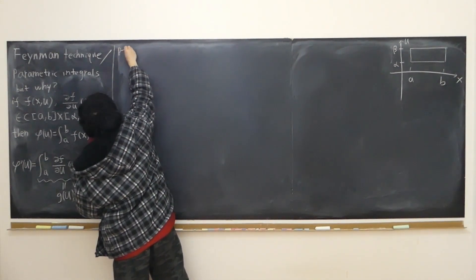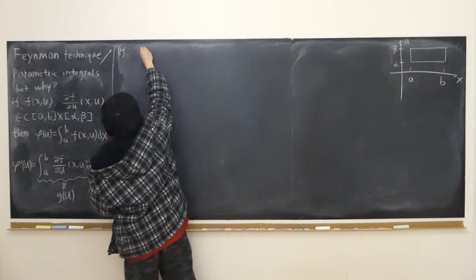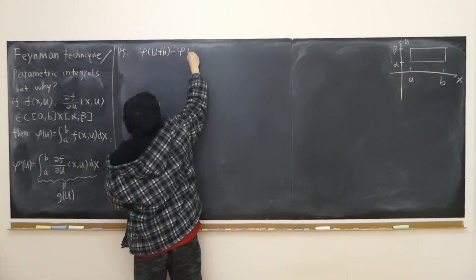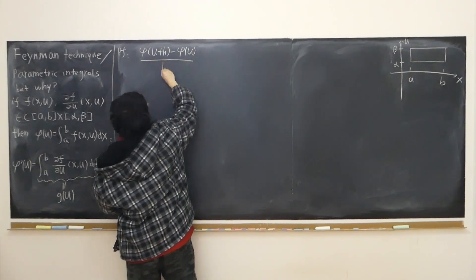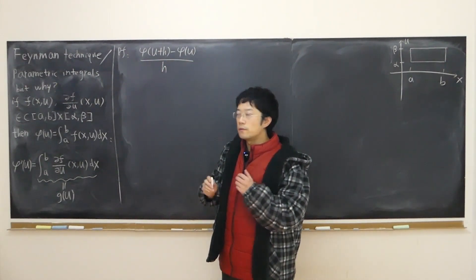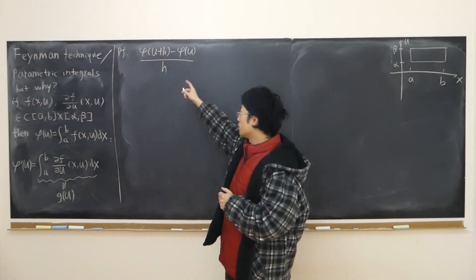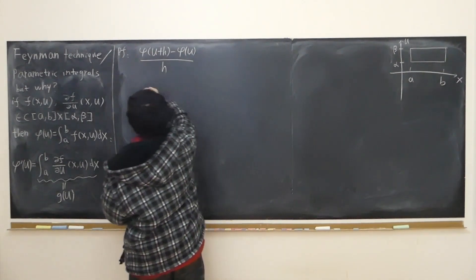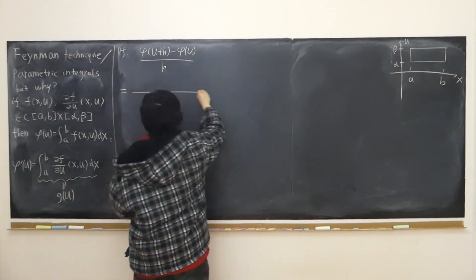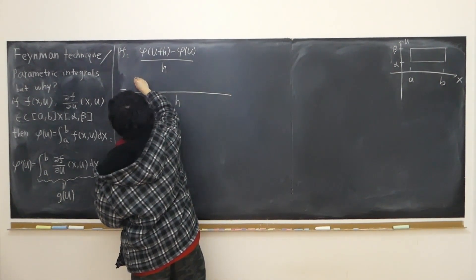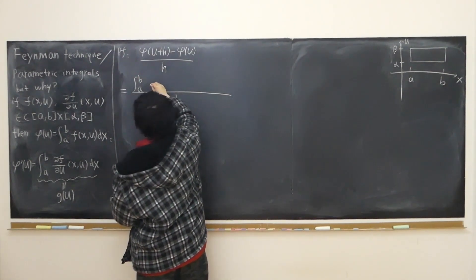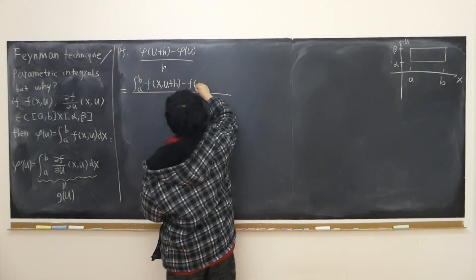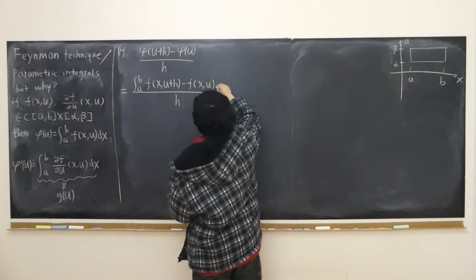Here's the proof. First I'm going to look at [φ(u+h) − φ(u)] / h, and see if as h approaches zero there exists a limit. That equals (1/h) times the integral from a to b of [f(x, u+h) − f(x, u)] dx.